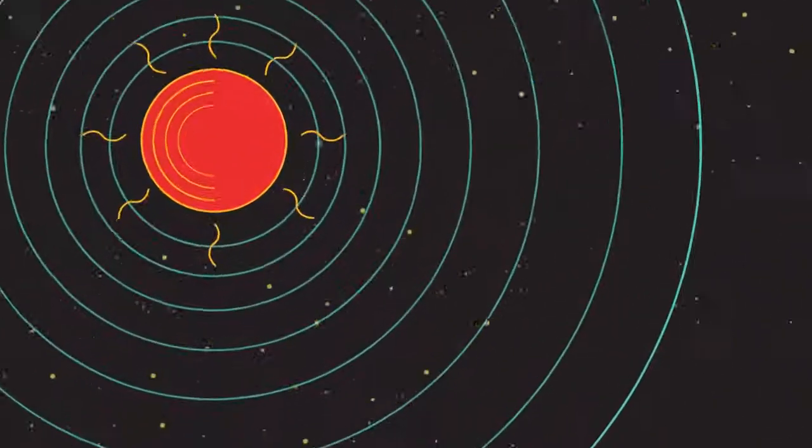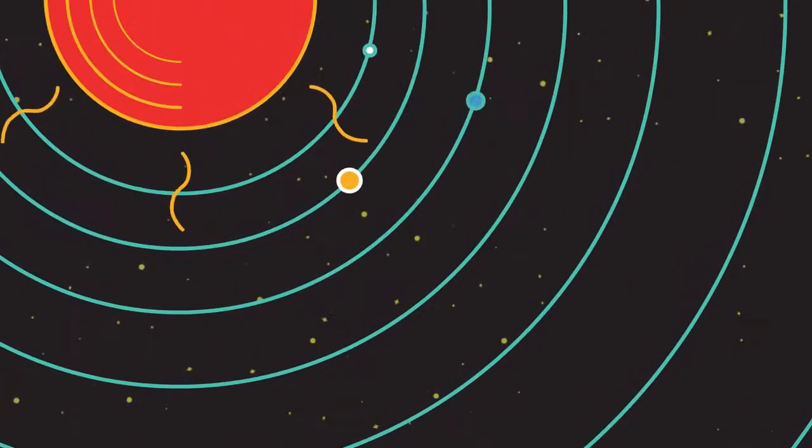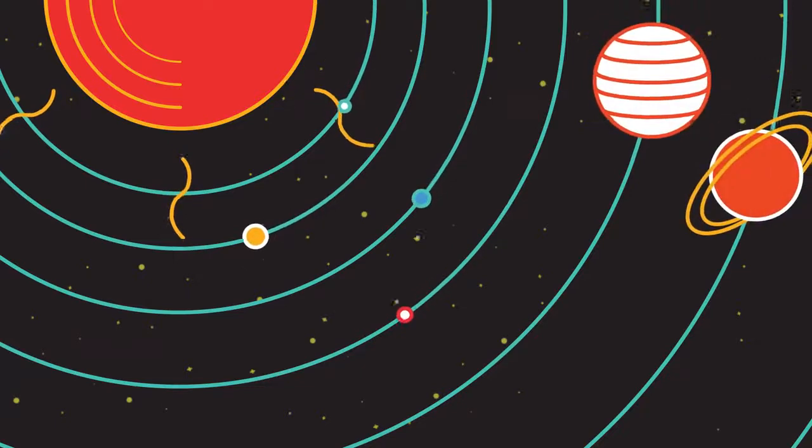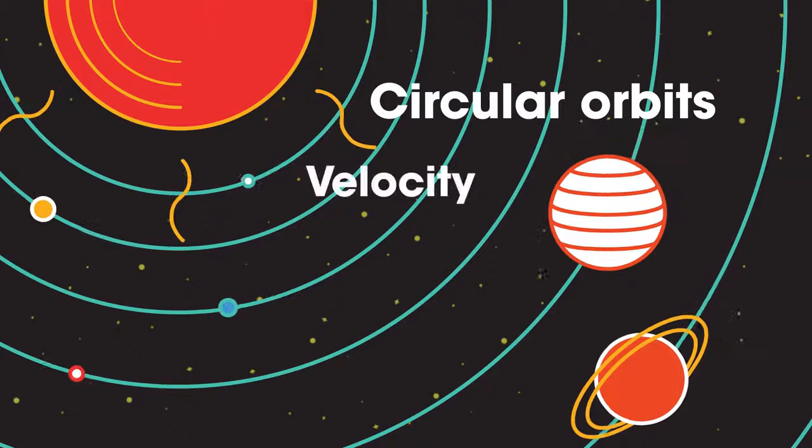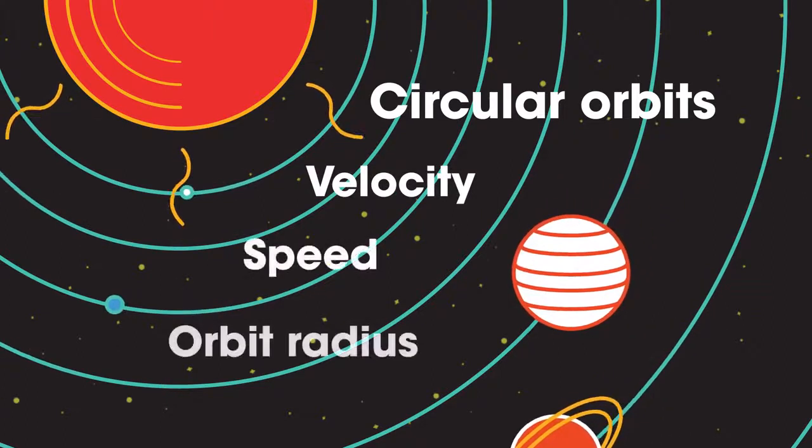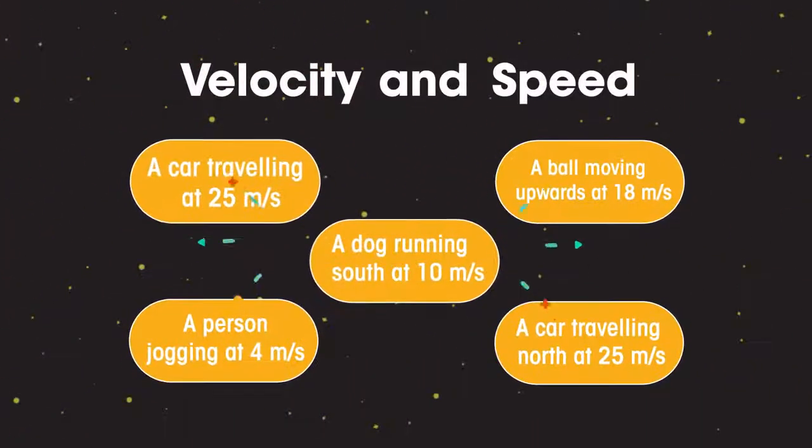In this video we're going to look at some ideas that are out of this world. We're going to look at circular orbits of planets, velocity, speed, and orbit radius.